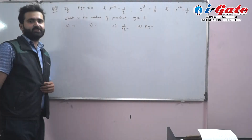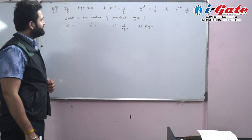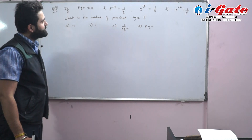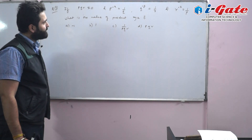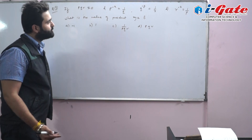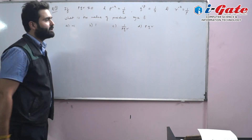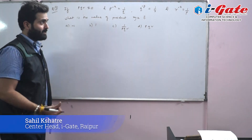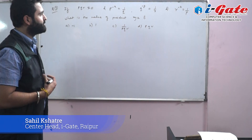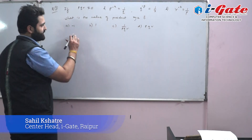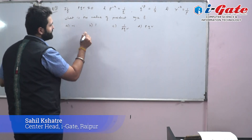Question 7: If pqr ≠ 0, and p^(−x) = 1/q, q^(−y) = 1/r, and r^(−z) = 1/p, what is the value of the product xyz?